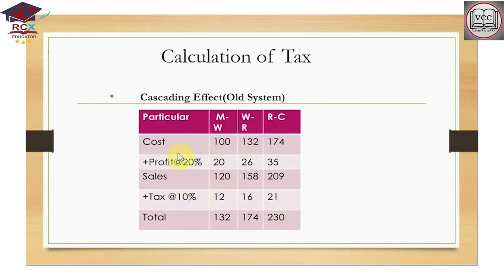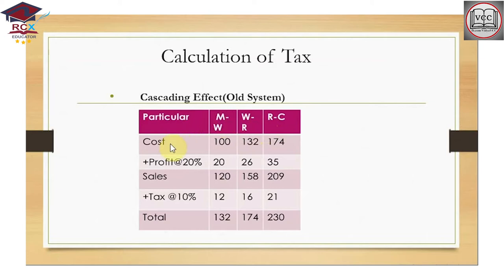What is the cascading effect? Let's look at the particulars and cost — from manufacturer to wholesaler, wholesaler to retailer, and retailer to final consumer. When the manufacturer has manufactured goods with a manufacturing cost of Rs. 100, and adds a profit of 20%, the cost becomes 120. So the manufacturer's selling price is 120.